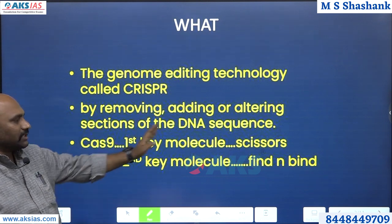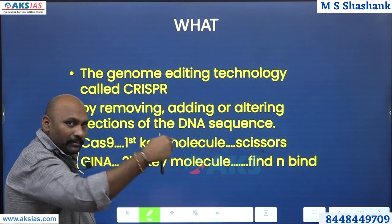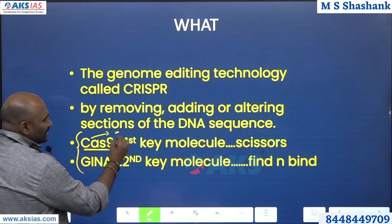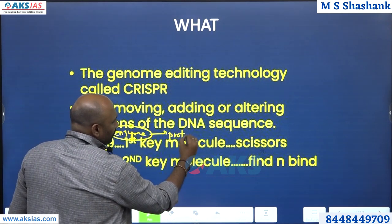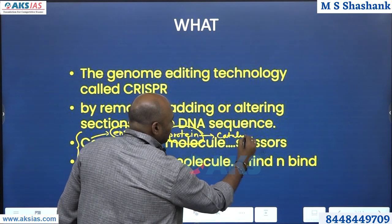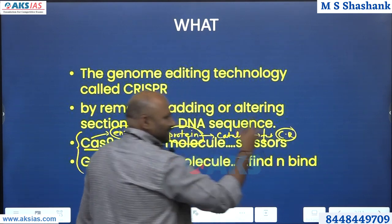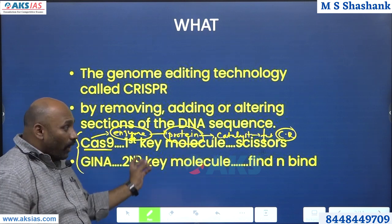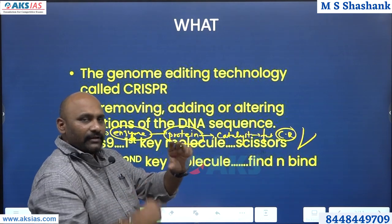In CRISPR, there are majorly two parts — two key molecules. The first key molecule is Cas9. Fundamentally, Cas9 is an enzyme, and an enzyme is a protein. The function of this protein is that it actually acts as a catalyst — it accelerates the chemical reactions and the sequencing within the body. So Cas9 is an enzyme, it's a protein, and it accelerates reactions. What it does is it works as the scissors — the cutter that cuts the defective gene.